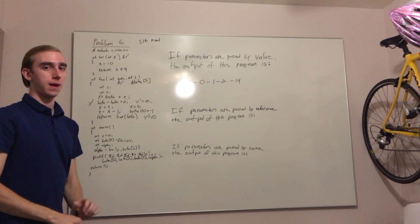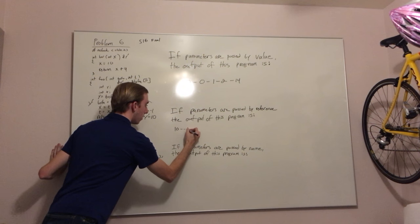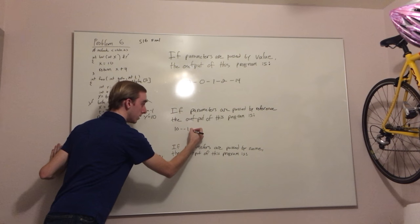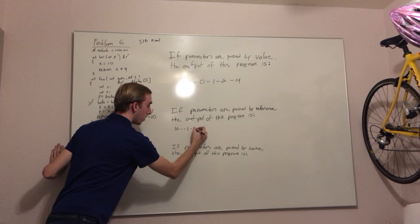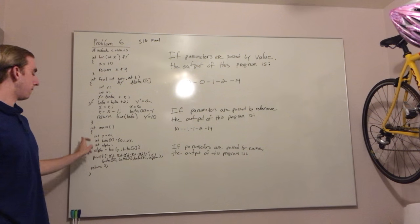This means that the final output is 10 for y, negative 1 for beta 0, 1 for beta 1, 2 for beta 2, and 14 for alpha.